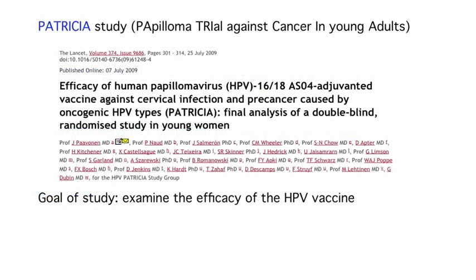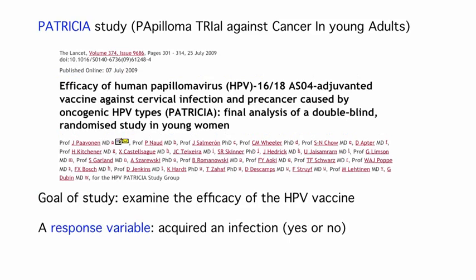In the Patricia study, we were interested in whether or not the subject in the study acquired an infection — so that is our response variable. Response variables can be categorical or quantitative. In this situation, we have a categorical response variable with two categories: yes, the subject acquired an infection in the study period, or no, they did not.